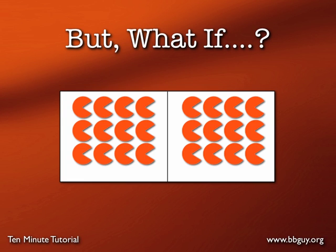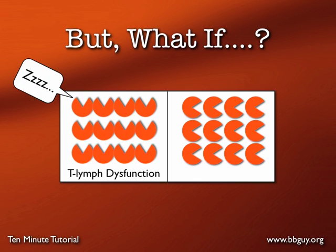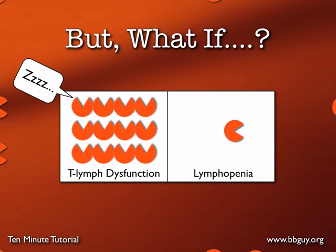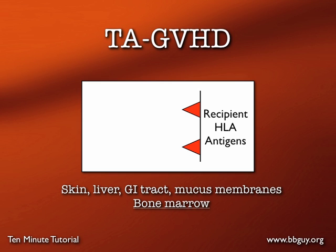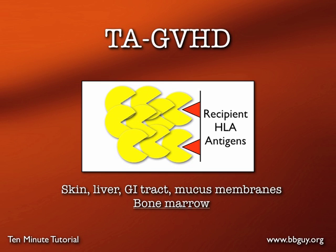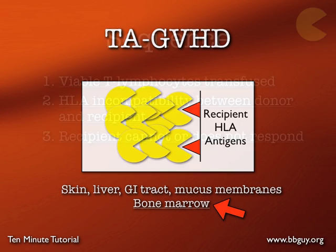However, if for whatever reason the recipient is experiencing T-lymphocytic dysfunction — either temporary or permanent — and those T-lymphocytes don't mount a counter-attack, or if the patient is lymphopenic and simply doesn't have enough T-lymphocytes to counter-attack, then transfusion-associated graft-versus-host disease can happen. The transfused T-lymphocytes attack, recruit other white cells, and cause significant damage through cytokines and a complex array of interactions. Again, the bone marrow is the biggest problem.